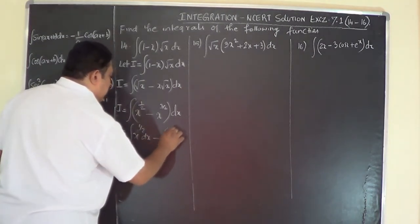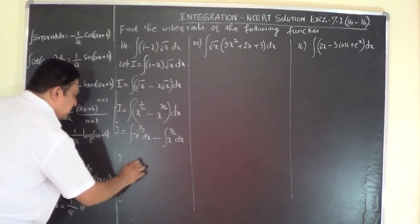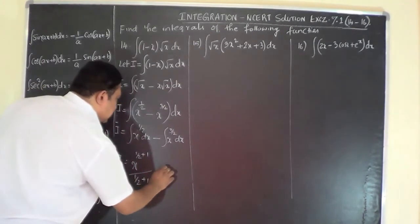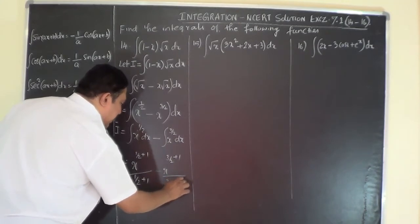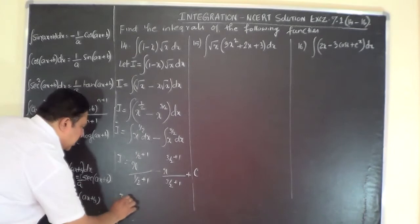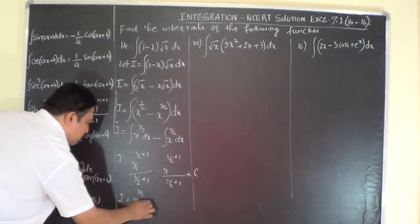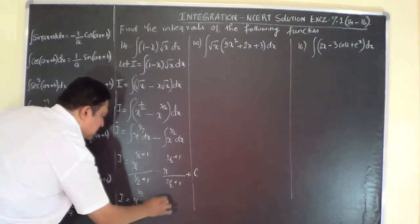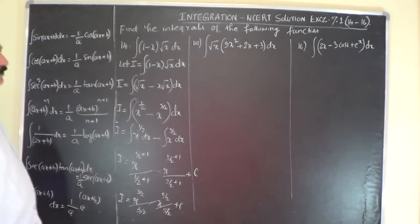Straight away use the power rule of integration: this is x^(1/2 + 1) / (1/2 + 1) minus x^(3/2 + 1) / (3/2 + 1) plus the constant of integration C. So I equals: half plus 1 is 3/2, giving x^(3/2) / (3/2), minus x^(5/2) / (5/2), plus C. That is the answer for Problem 14.